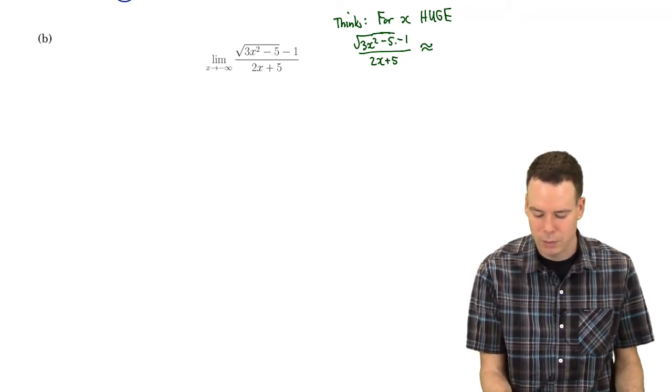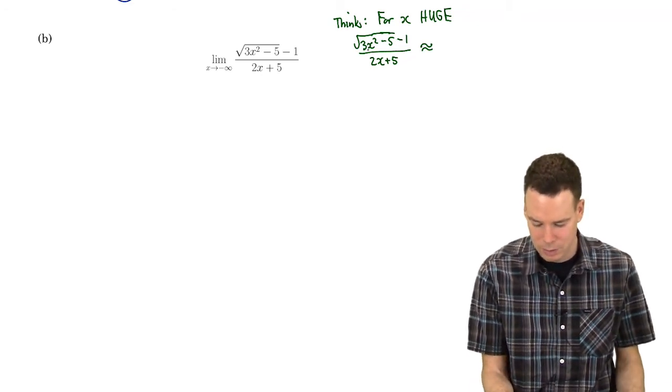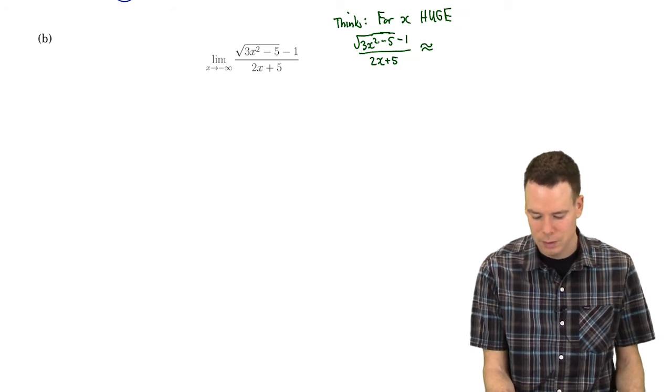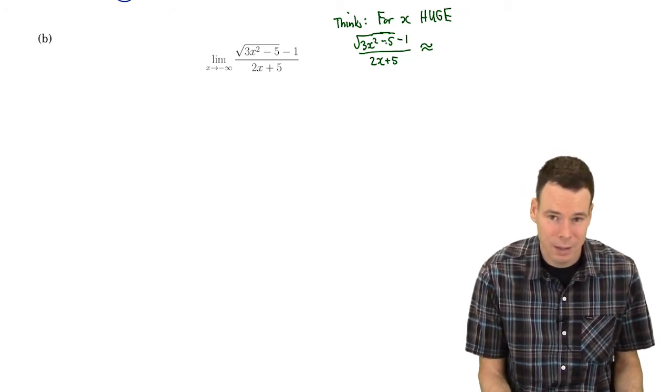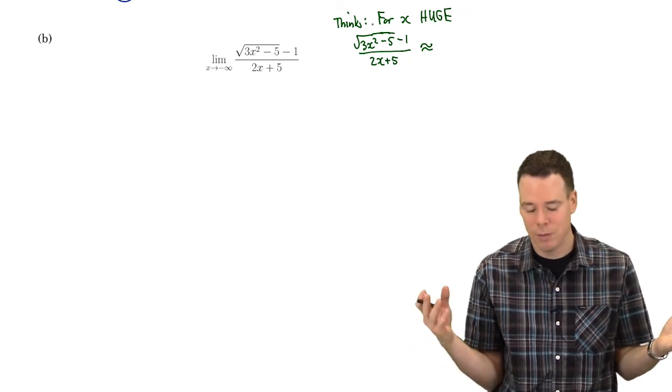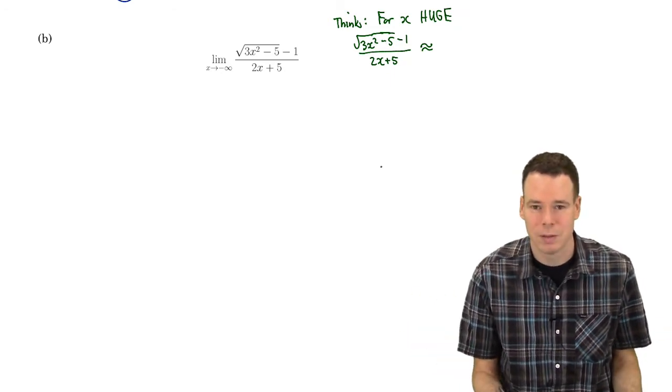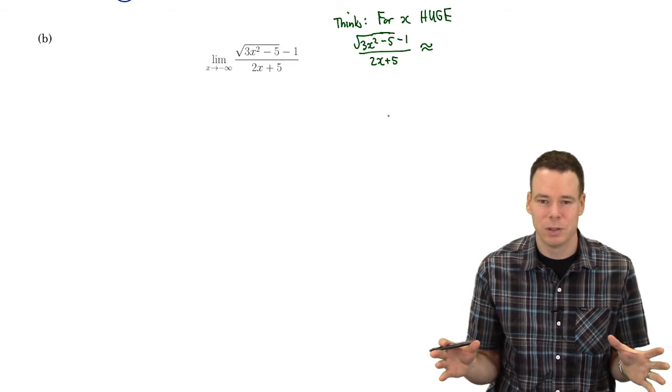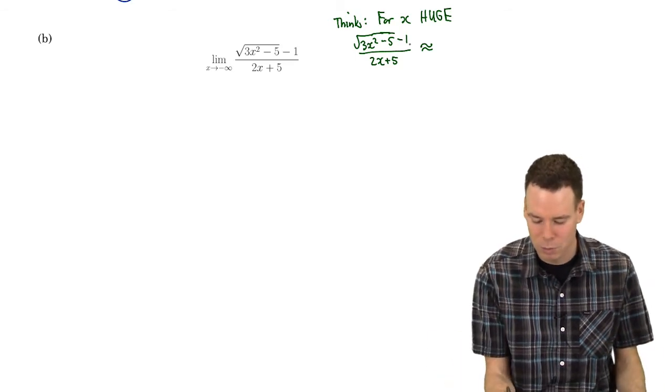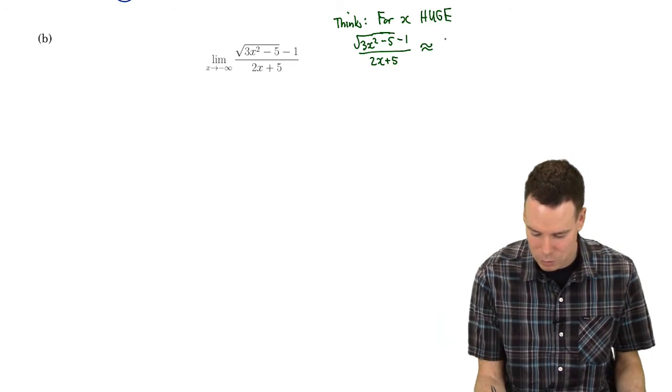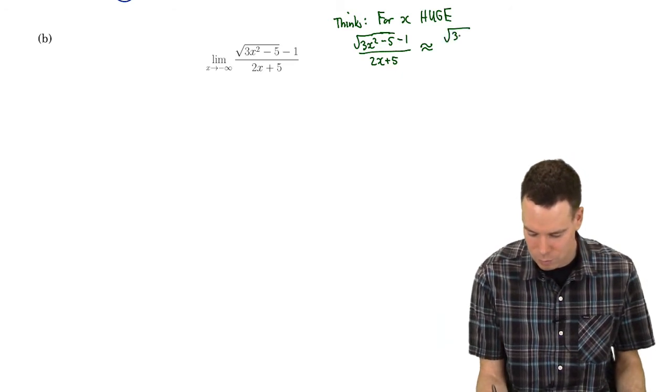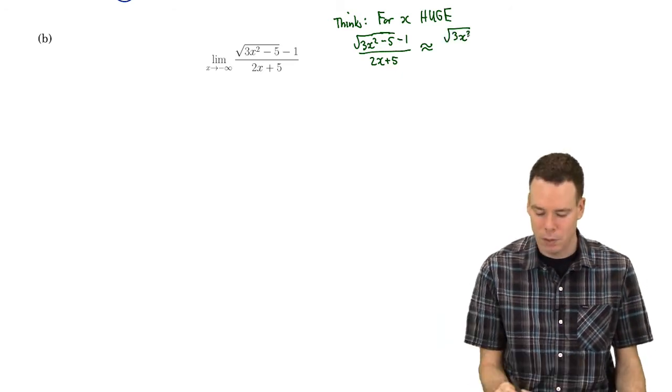Well the thing in the numerator when x is huge the only thing that matters is the x squared. If x is a million, three times a million squared minus five, you're subtracting five from a million squared times three, it's negligible. Then you square root it and subtract one, that doesn't make much of a difference either. This thing is roughly just the square root of 3x squared.